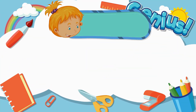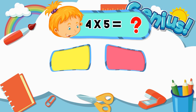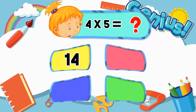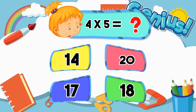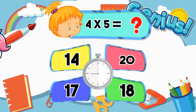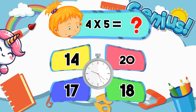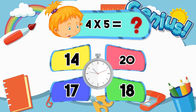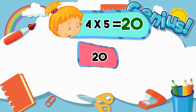What is 4 times 5? 14, 20, 17. Answer: 20.